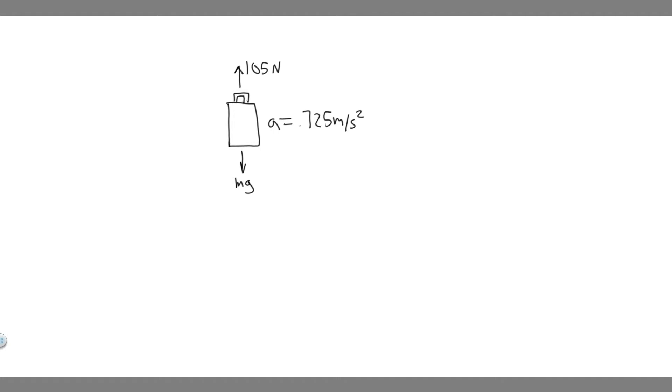What are A, the mass, and B, the weight of the suitcase? As usual, the first thing you always want to do is draw what's going on. So we have this suitcase, and we know we're going to be applying a 105 newton force pulling it upwards. So you want to label that, and we also know the acceleration of the suitcase is 0.725 meters per second squared upwards.